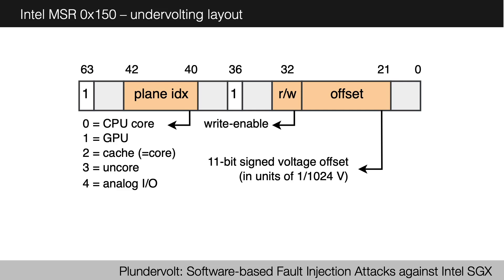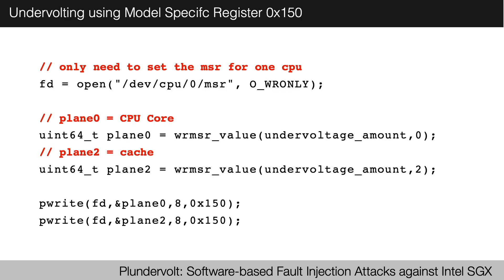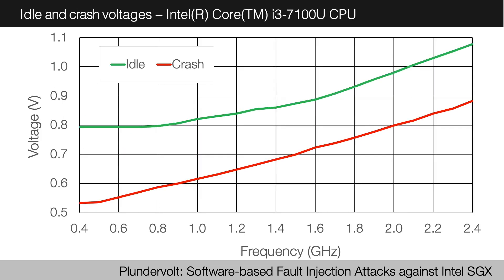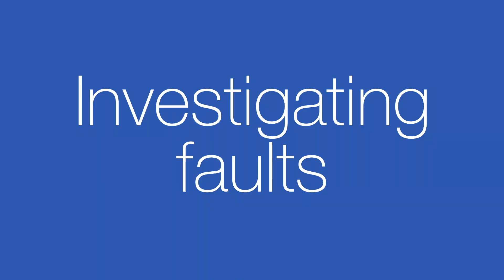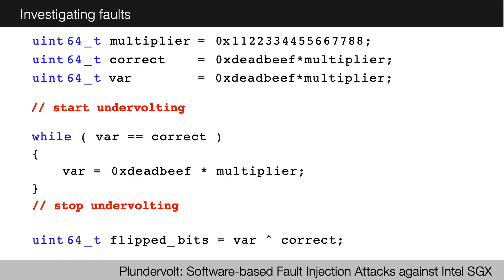So how do we use this? Here's a little bit of code to undervolt — it's relatively straightforward. I haven't included the function to convert an undervoltage into the format required by the MSR, but that is available on my GitHub. The first thing we wanted to do was compare the idle voltage with the voltage when the computer crashes. These were our results for different frequencies on an Intel Core i3. As you can see, for each frequency there's a very large, stable operating voltage. But we wanted to know: is it possible to fault it somewhere close to the crash point?